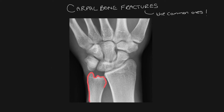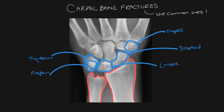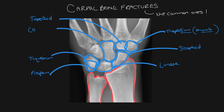In this video we're going to be covering common carpal bone injuries that can be seen on plain film. When assessing the wrist we take a PA, an oblique and a lateral film. The first thing to do is to trace around the bones to look for any breaks in the cortices, starting with the distal radius and ulna, then tracing around all eight of the carpal bones, and then trace around the proximal metacarpals again looking for any breaks in the cortices.